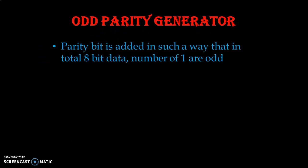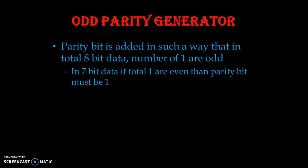In case of odd parity generator, the parity bit is added in such a way that in total 8-bit data the number of 1s are odd. For example, in 7-bit data if the total number of 1s are even, then we have to make it odd, so the parity bit must be 1.